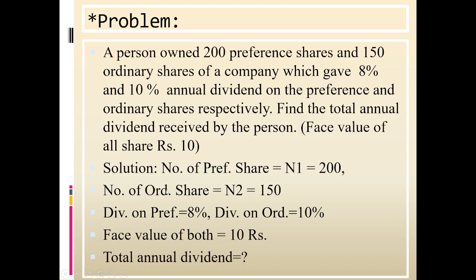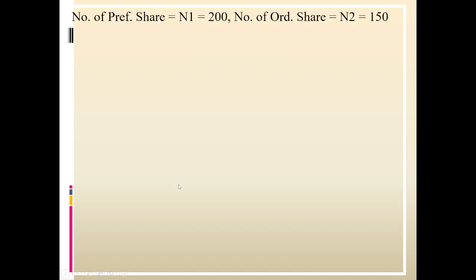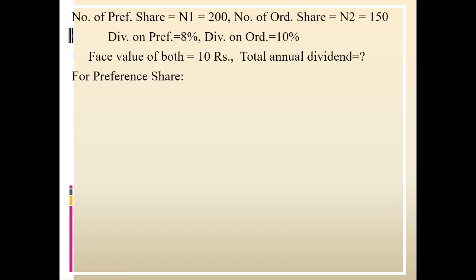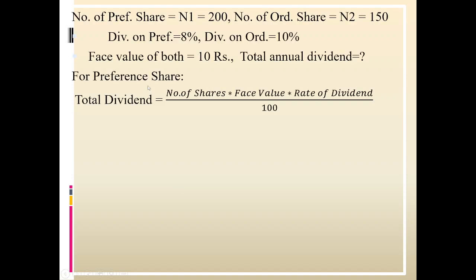To find the total annual dividend, we first find the total dividend of preference shares, then the total dividend of ordinary shares, and add them together. Using the formula: total dividend = number of shares × face value × rate of dividend ÷ 100, applied to preference shares.